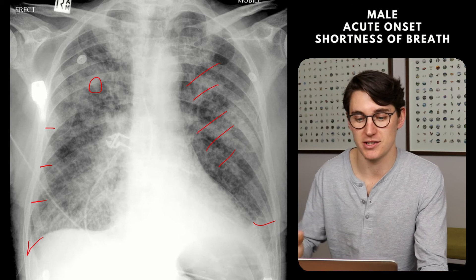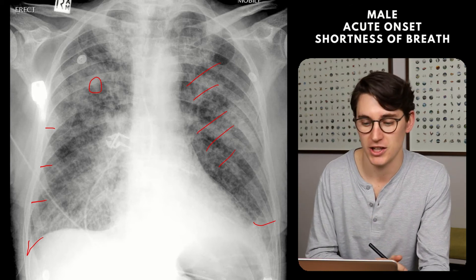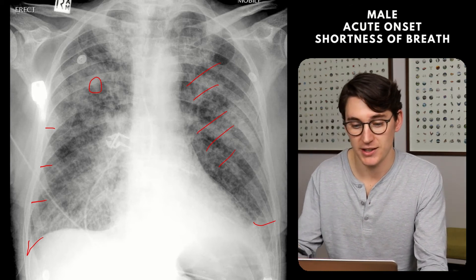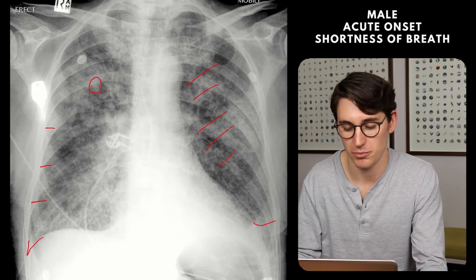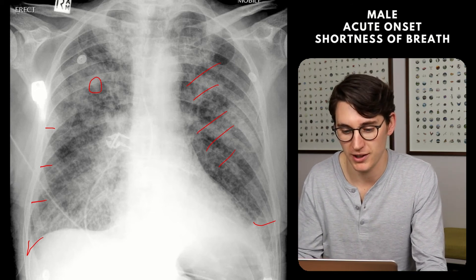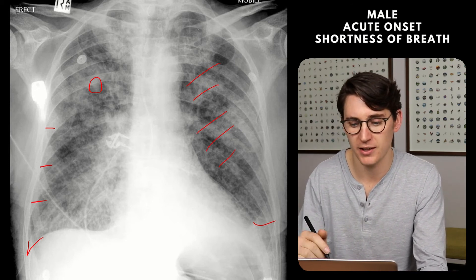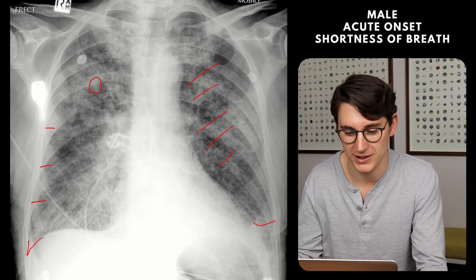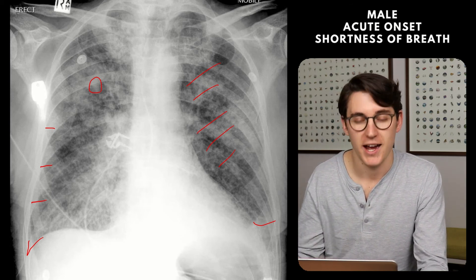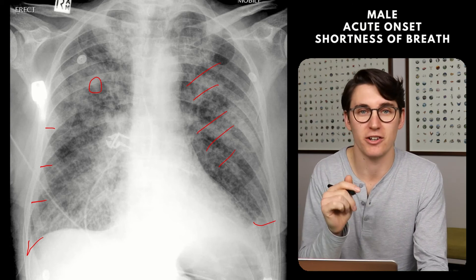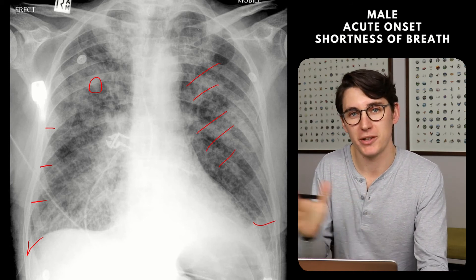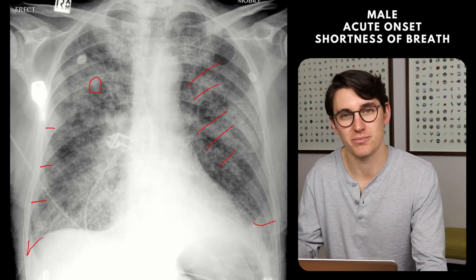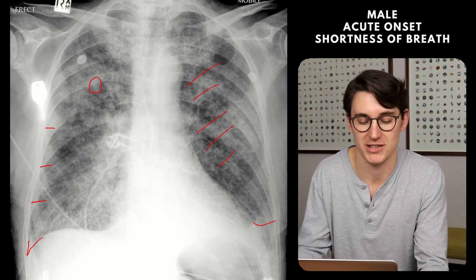Is there a pleural effusion? Is the heart enlarged? What's the distribution of the opacification? Is there evidence of redistribution of blood within the lung fields — upper lobe diversion of pulmonary vasculature? Those subtle radiological signs can help pin your diagnosis, swaying you more towards pulmonary edema versus infection and vice versa.